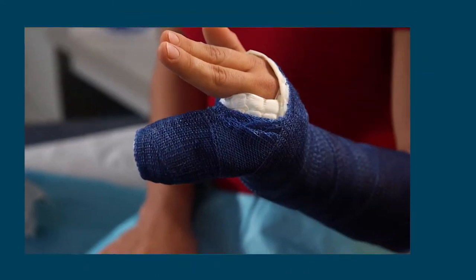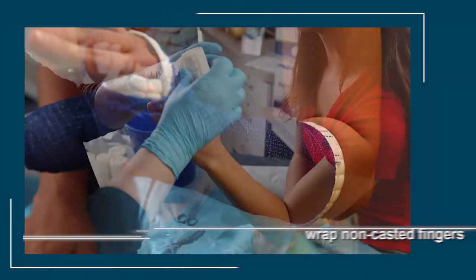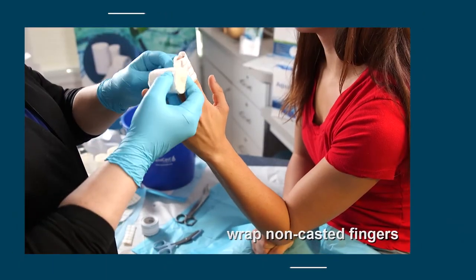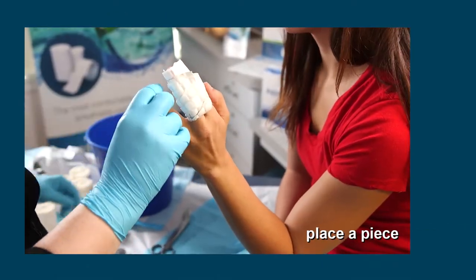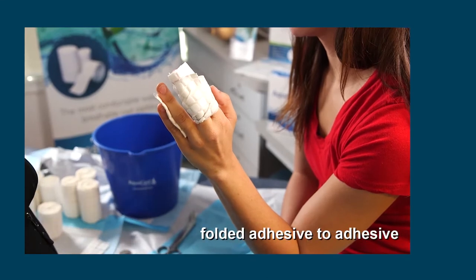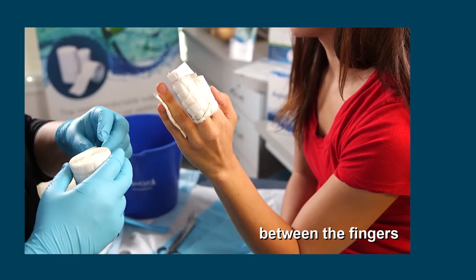To keep the non-casted fingers out of the way, wrap them with AquaCast Liner or other protective material. Place a piece four pads long, folded adhesive to adhesive, between the fingers.